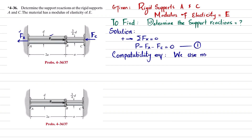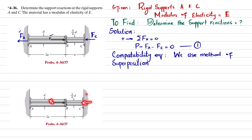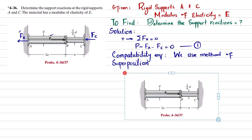In the method of superposition, we split the problem into two cases. In the first case, we ignore support C and apply only the point load P. In the second case, we ignore the load P and apply the reaction force Fc at C.